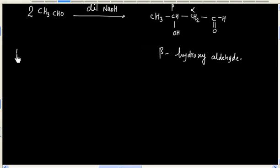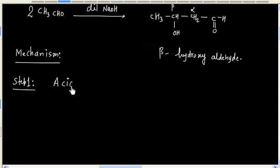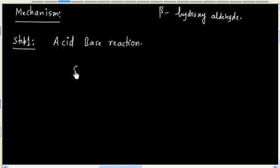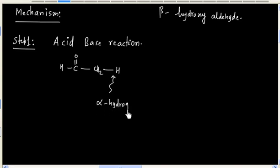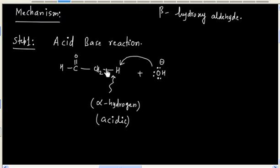Now let us discuss the mechanism of this reaction. The first step is simply an acid-base reaction. The aldehyde has an alpha-hydrogen and this is acidic in nature. So OH- will act as a base and it will extract a proton, and we will generate an enolate ion.